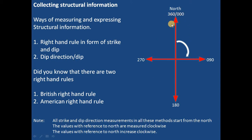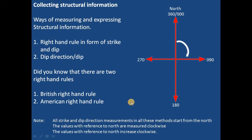We start counting the degrees from north clockwise. So for both right-hand rule and dip direction, we count the readings from the north. The values with reference to the north increase clockwise. All strikes and dip direction measurements start from the north.